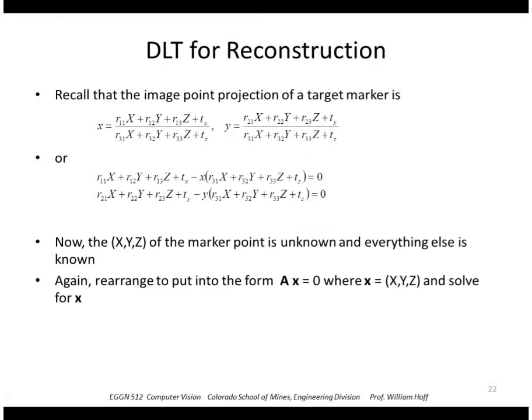So we can put these equations into the form ax equals 0. Here, the unknown x is just the x, y, z of the point. And again, solve for x using the solution of the system of homogeneous equations.